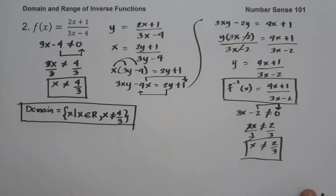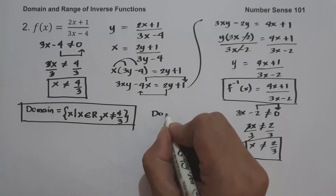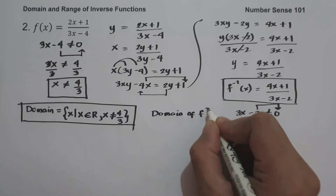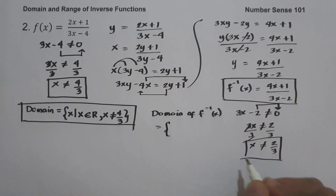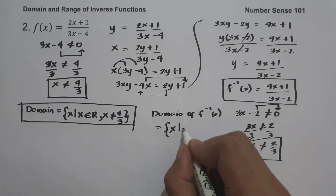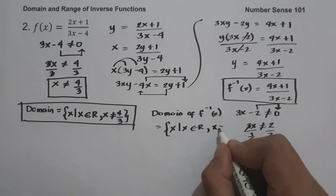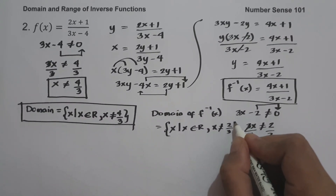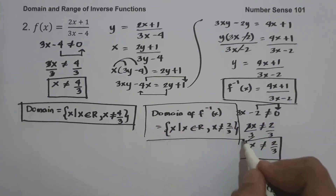So to write the domain of the inverse function, the domain of the inverse function is the set of x values such that x is the set of all real numbers except 2 thirds. This will be the domain of the inverse function.